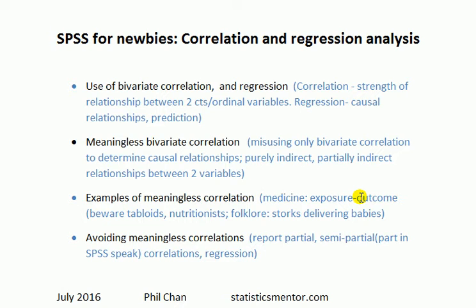This correlation is meaningless because the relationship between income and cancer is not direct. Bivariate correlation just measures the strength of the linear relation between two continuous or ordinal variables — direct or indirect. In this case, income and cancer have a positive correlation, but it's meaningless because there are other variables, such as age, that are correlated to both income and cancer. If we take account of age, you'll find there is no real correlation between income and cancer.